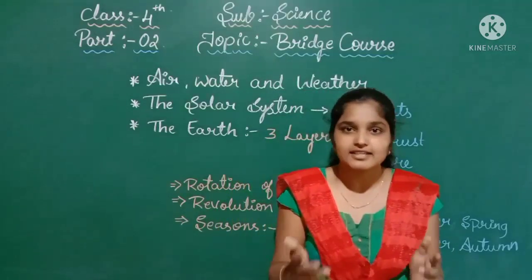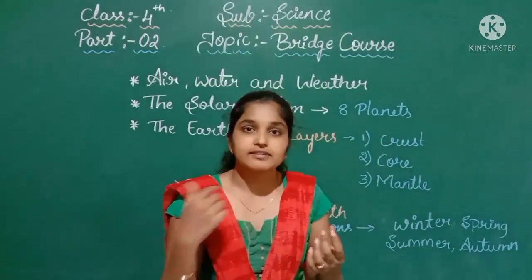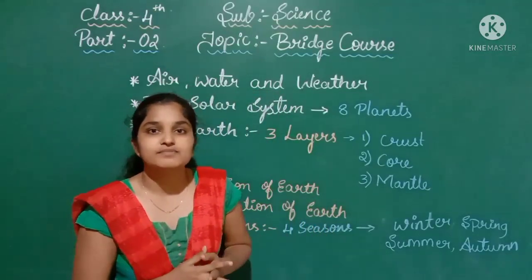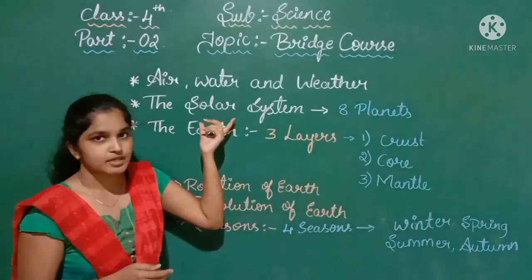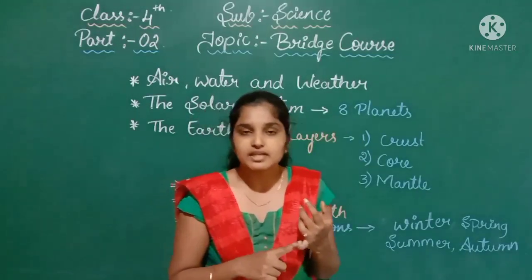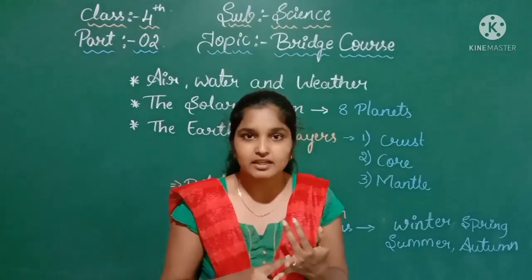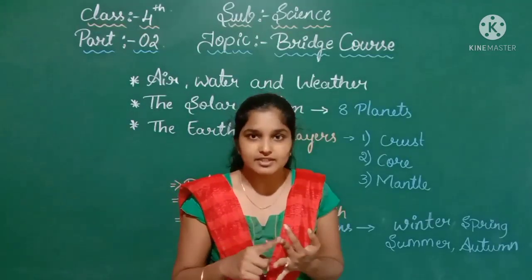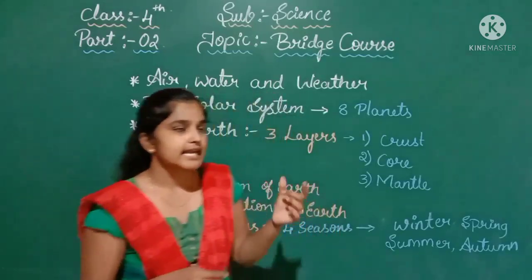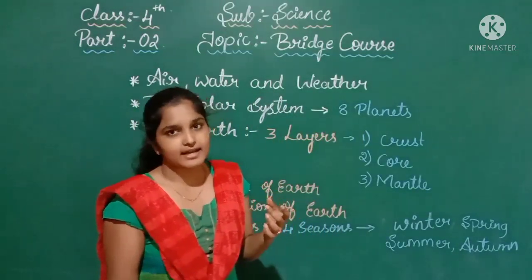Our sun is a star, and eight planets are revolving around the sun — this forms the solar system. The eight planets are Mercury, Venus, Earth, Mars, Jupiter, Uranus, Saturn, and Neptune. Earth is also one of the planets and comes under the solar system.